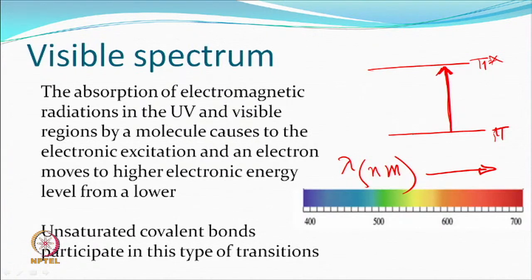An important thing is that there is a transition which takes place from one level to another. Since it is a transition, electrons will not stay there — they will come back and whatever they can do, they do. Sometimes groups respond to near ultraviolet range, but when the electrons come back, because of various energy losses, the final radiation which comes out is in the visible range.